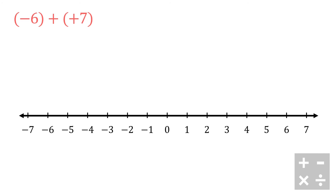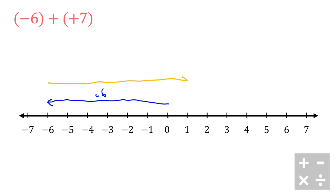One last example: negative six plus positive seven. I start at zero, go six units in the negative direction for negative six, then seven units to the right for positive seven. You'll notice I end up at positive one, which is exactly what negative six plus positive seven gives us. Make sure to go practice some of these on your own.